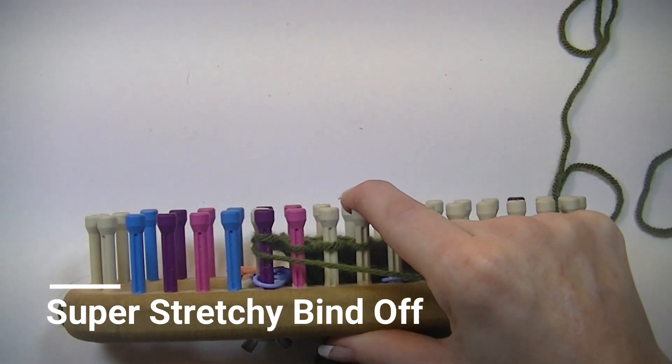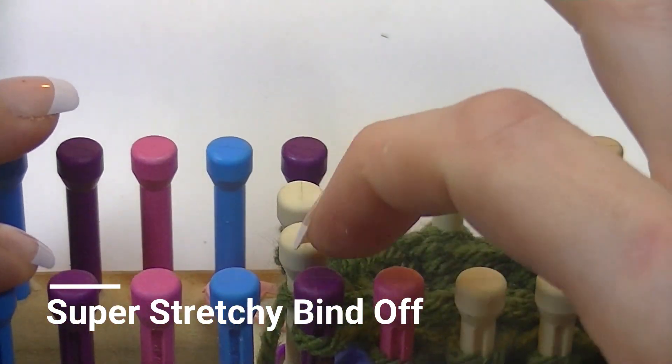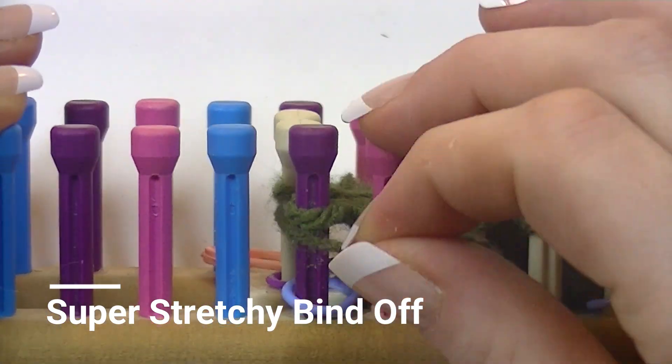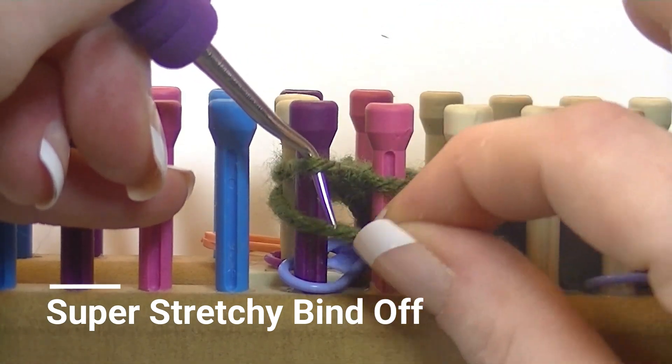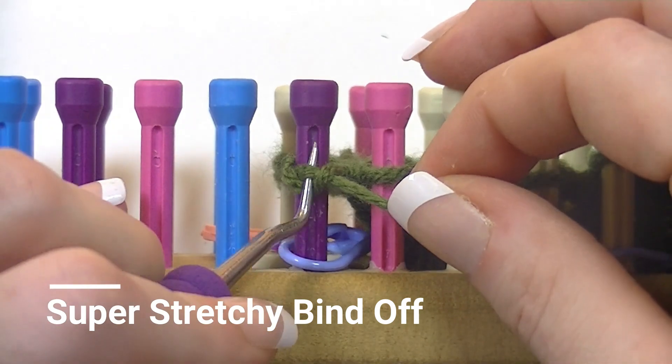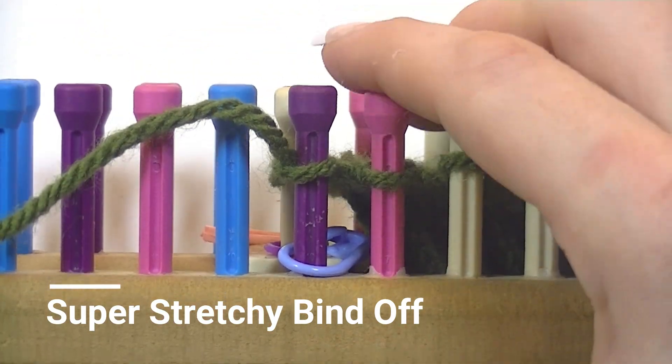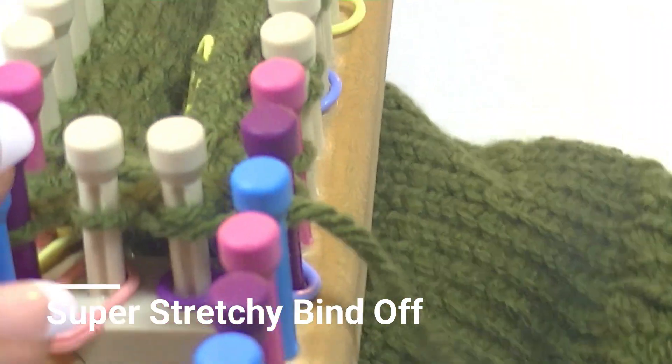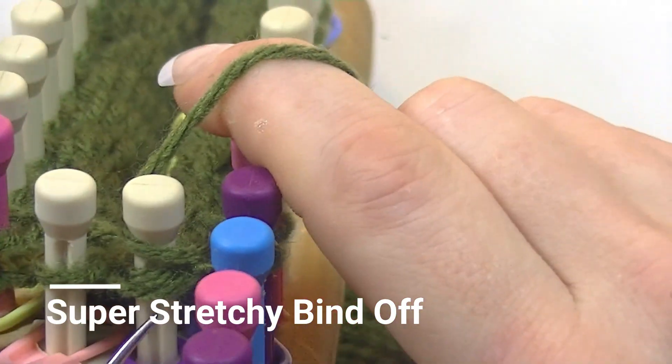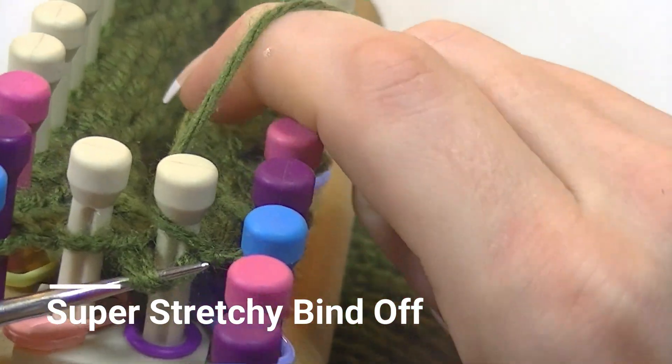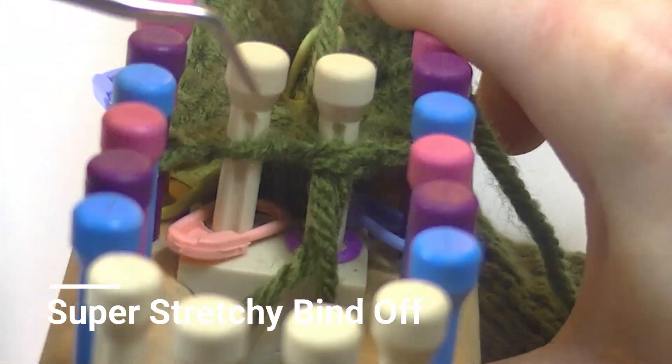Let me zoom this in some. So we skipped a peg, and now we are going to hold the working yarn underneath the stitch on the peg, like you do for a purl stitch, and pull it up through the bottom. Now we are going to go back one peg. Treat it like the knit stitch, which we will take both those strands and pull the working yarn down.